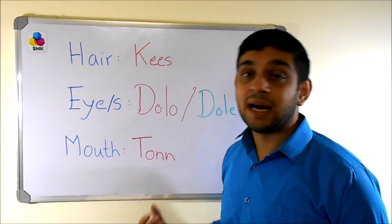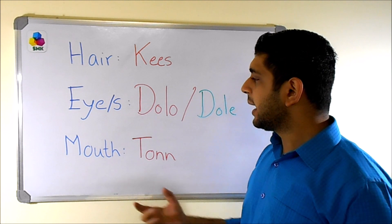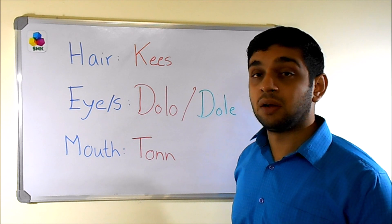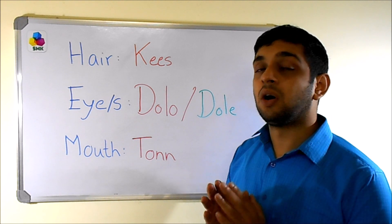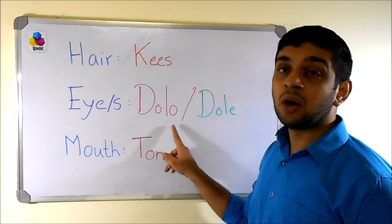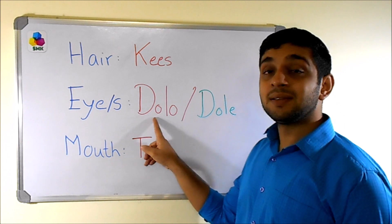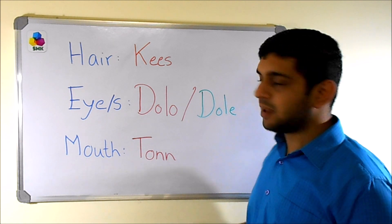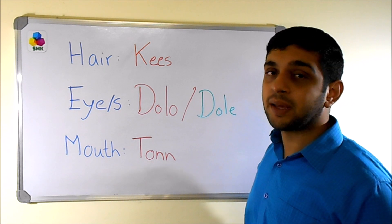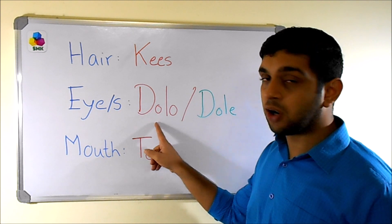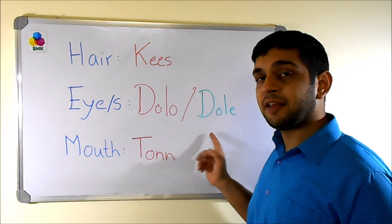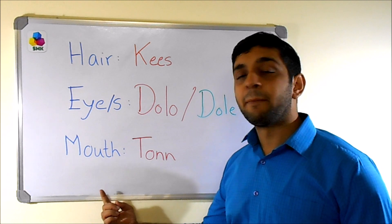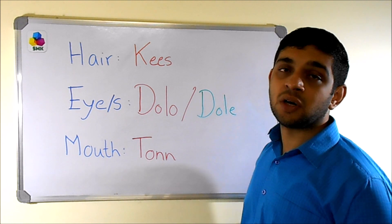The next one is eye or eyes. Eye in Kokani is 'doro' — this is not 'lo', this is 'ro'. Doro — this is singular, meaning one eye. If you mean to say eyes, then it will be 'dore'. So: doro for one eye, dore for eyes.